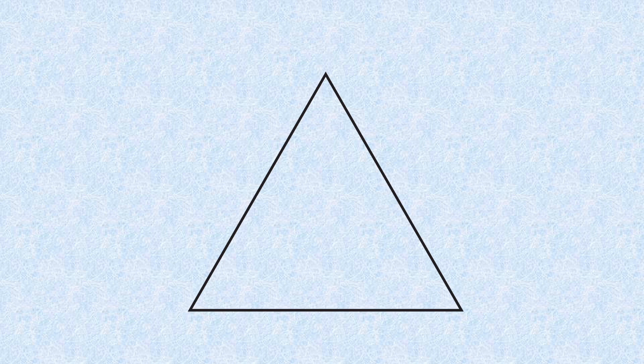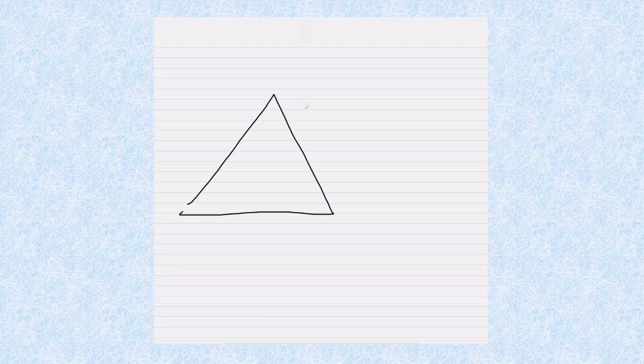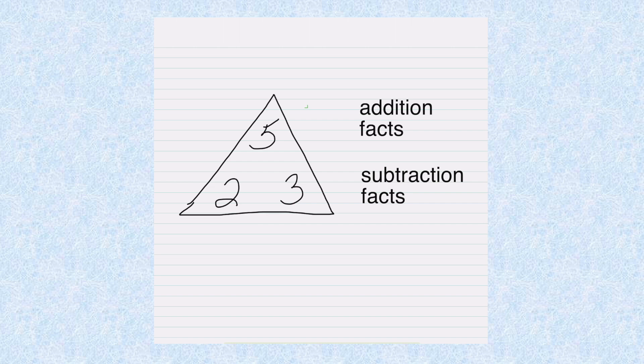A Fact Family Triangle is basically a triangle. If we put numbers from a Fact Family in the three corners, it can help us list addition and subtraction facts for that family of numbers.